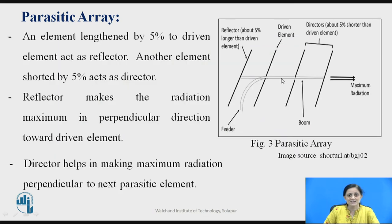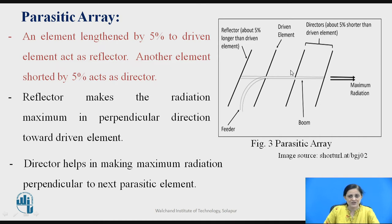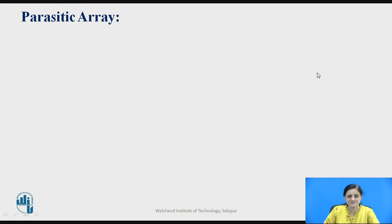A parasitic element lengthened by 5 percent relative to the driven element acts as a reflector. The length of the reflector is thus more than the driven element. The directors, connected after the driven element, have a length 5 percent shorter than the driven element. The reflector makes radiation maximum in the direction perpendicular toward the driven element, and the directors help in making maximum radiation perpendicular to the next parasitic elements.